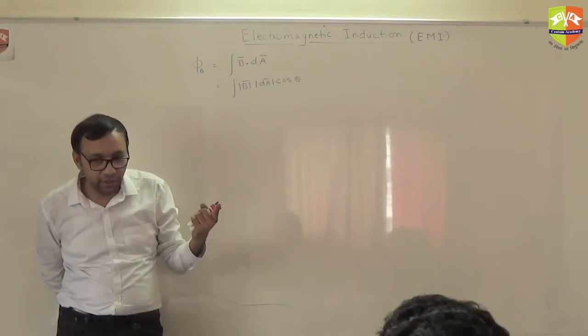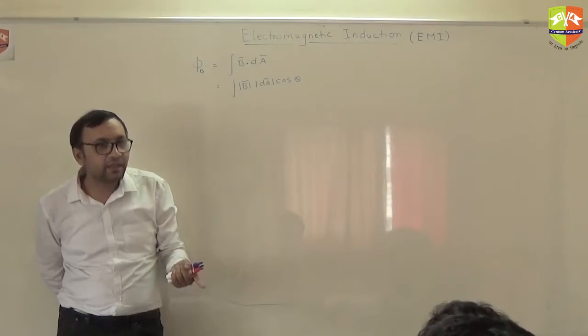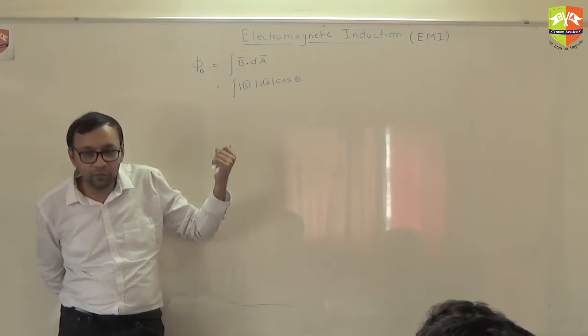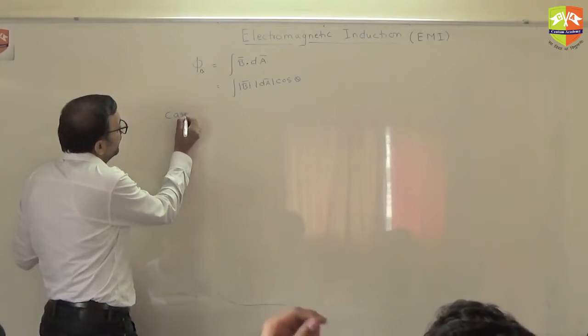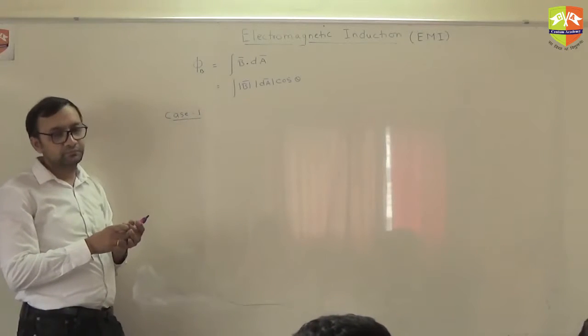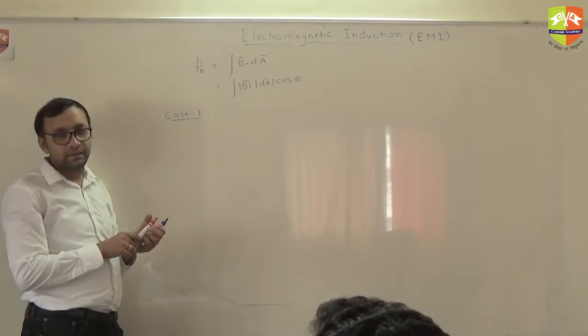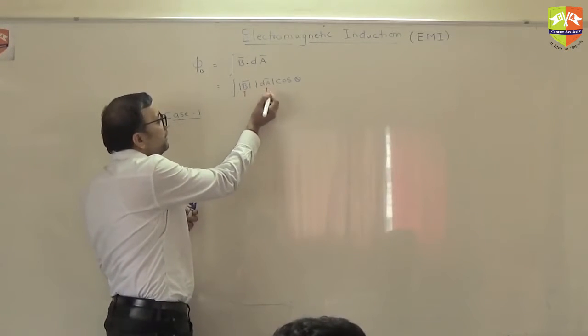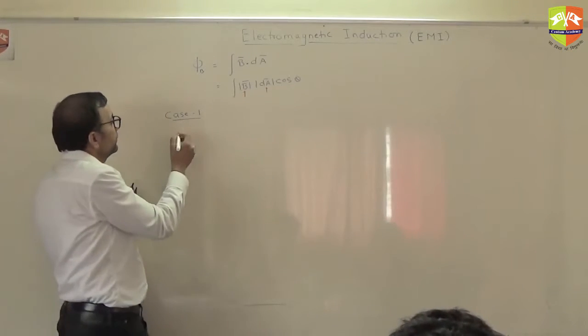Fine. And it becomes easy for us to integrate this for some few symmetrical cases. Just like in Gauss law, E dot dA integral, we were able to integrate it easily for symmetrical cases. Similarly, here also, there are a few symmetrical cases that will let you calculate this value easily. Fine. So let us talk about those cases. Let us talk about those cases. Case number one. What do you think the best case will be? θ is 90. Best case. It becomes zero.